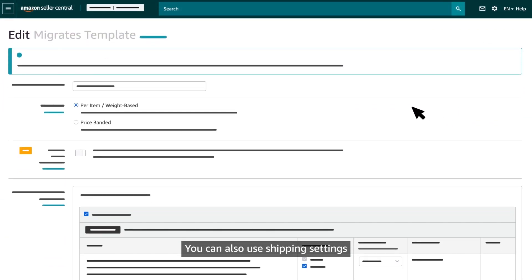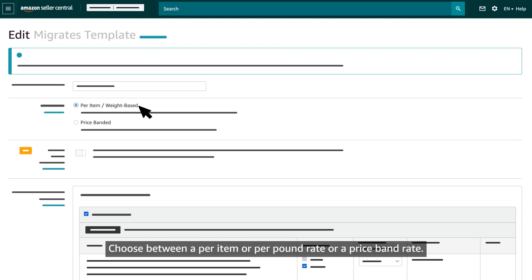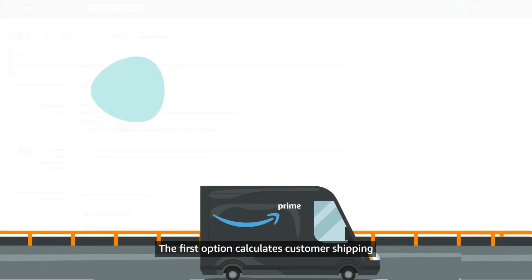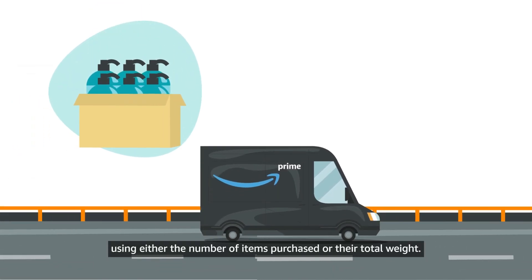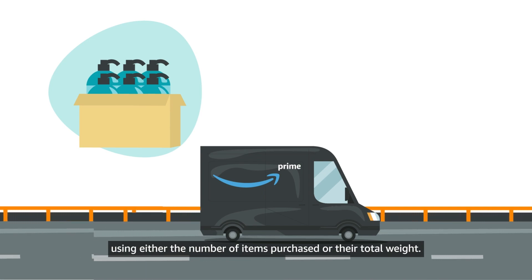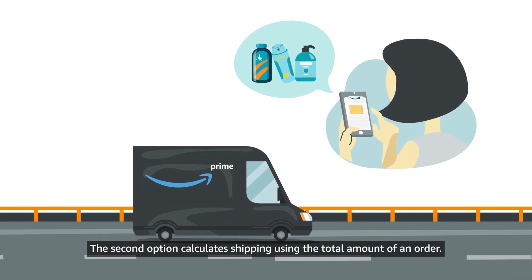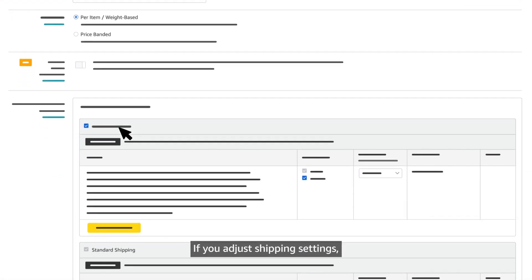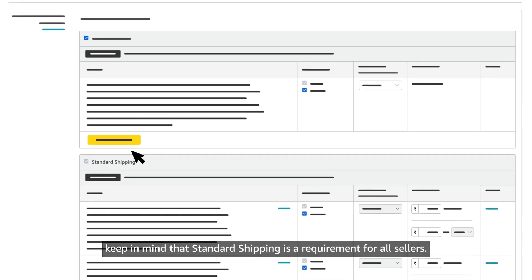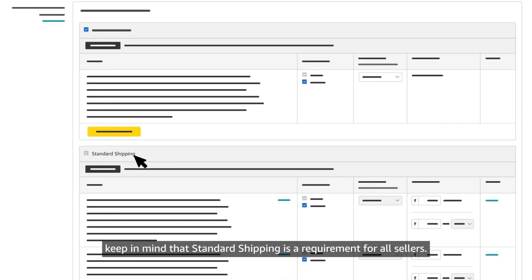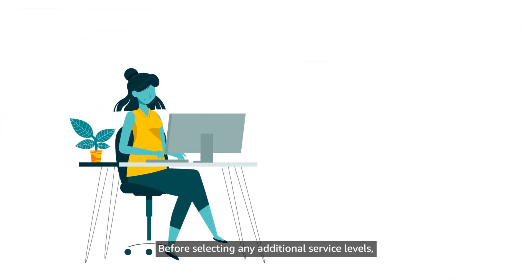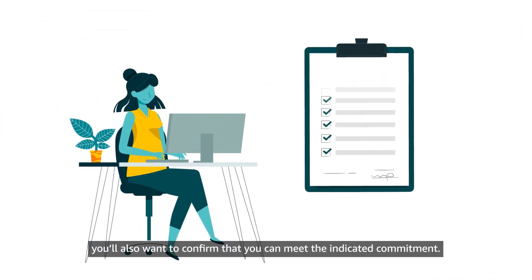You can also use shipping settings to adjust the method you use to calculate shipping fees. Choose between a per-item or per-pound rate, or a price band rate. The first option calculates customer shipping using either the number of items purchased or their total weight; the second calculates shipping using the total amount of an order. When adjusting shipping settings, keep in mind that standard shipping is a requirement for all sellers. Before selecting any additional service levels, you'll also want to confirm that you can meet the indicated commitment.